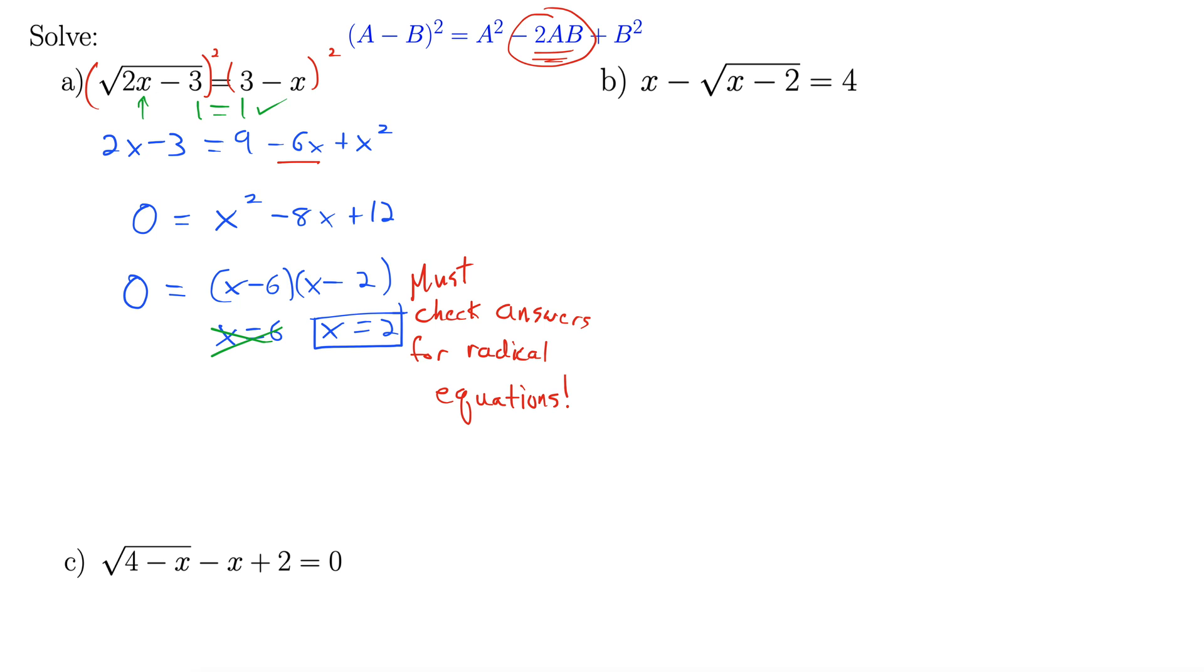Let's try b. For b, we have x minus the square root of x minus 2 equals 4. First step with these kind of equations is always isolate the radical first. Alright, because these will get really sour really quick if you don't do that. One very important step.